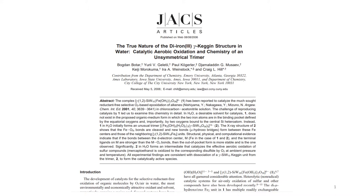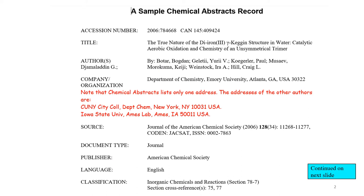This is just part of the first page of this 2006 article. Notice that they list the addresses of all the authors who contributed to this paper — many papers these days are written by people at different institutions. The remaining slides show what this record looks like in the Chemical Abstracts database. Those two numbers at the top are a way to identify when this particular article was put into the database, and each article has its own unique number.